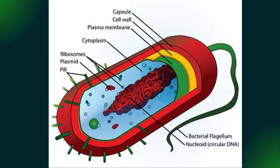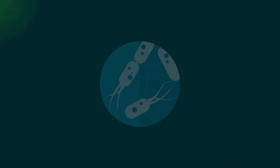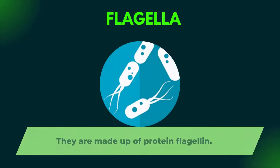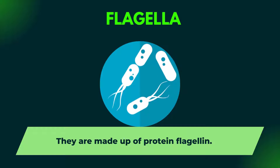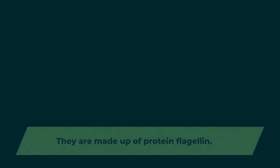Flagella originate from basal body. Basal body is present in the cytoplasm just beneath the cell wall. Composition of flagella: flagella are made up of protein. They are protein in nature, and the protein from which they are made is called flagellin.